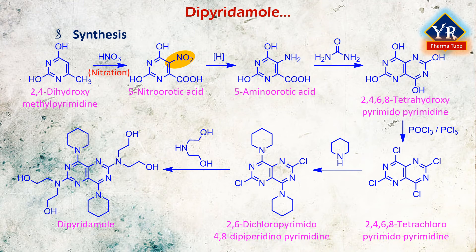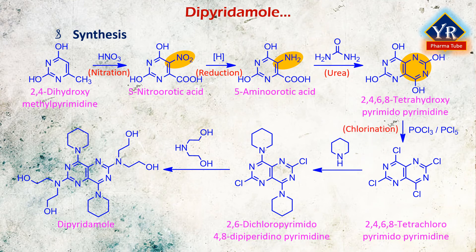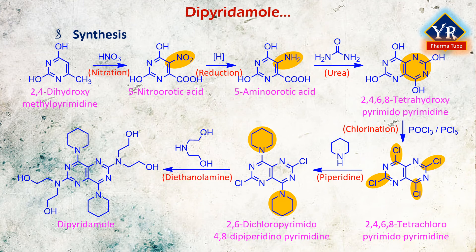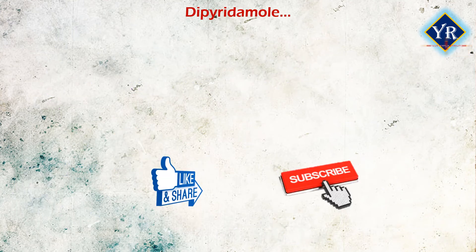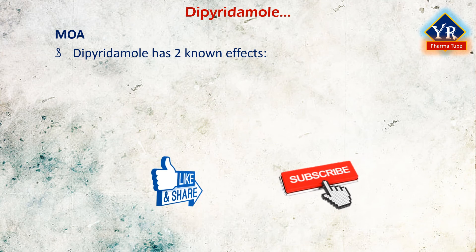Reduction of the nitro group in 5-nitroorotic acid by various reducing agents gives 5-aminoorotic acid, which is reacted with urea or with potassium cyanide to give 2,4,6,8-tetrahydroxypyrimidopyrimidine. This undergoes a reaction with a mixture of phosphorus oxychloride and phosphorus pentachloride to form 2,4,6,8-tetrachloropyrimidopyrimidine. Reacting the resulting tetrachloride with piperidine replaces the chlorine atoms at C4 and C8 with piperidine, giving 2,6-dichloropyrimidopyrimidine. Reacting this with diethanolamine gives the desired product, dipyridamol.